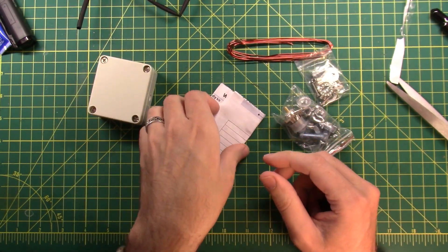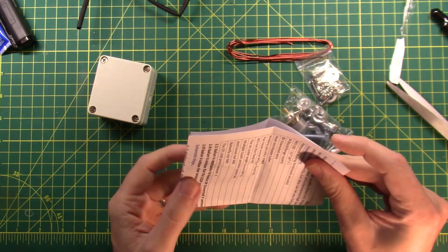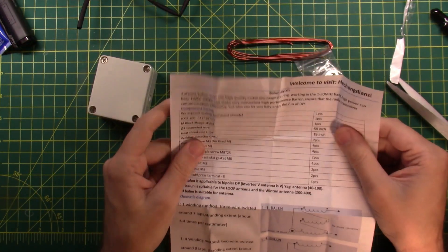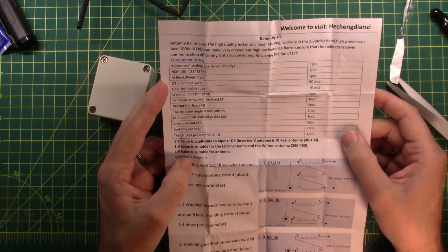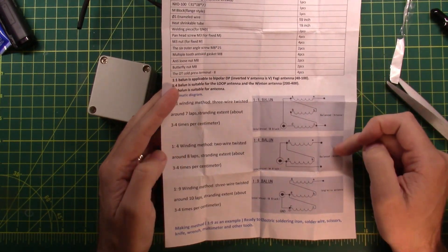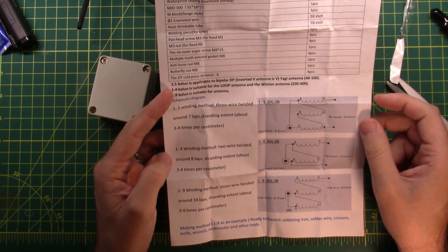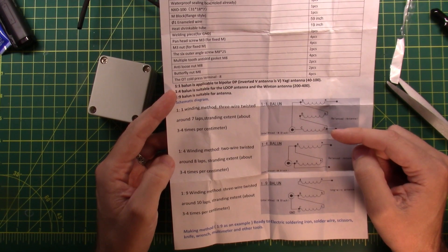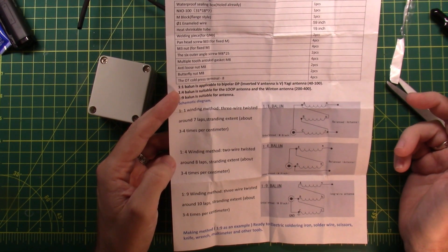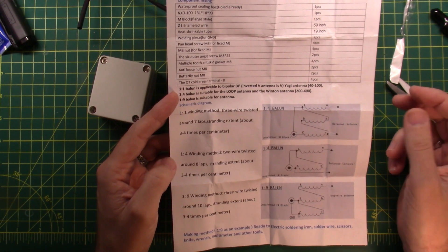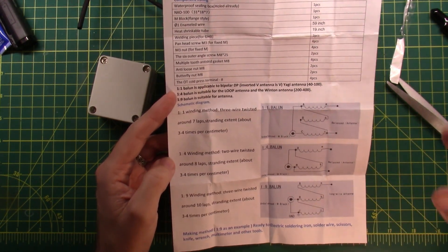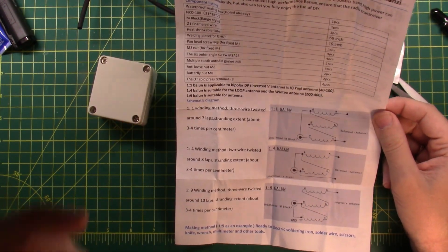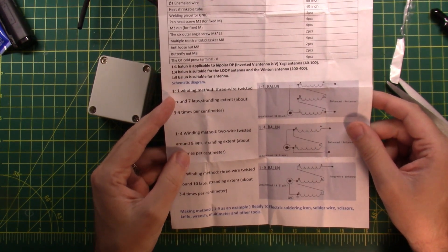So there are some wiring instructions here and some bill of materials type stuff. One-to-one balun, one-to-four balun, one-to-nine balun. Winding method: three wire twisted around seven laps, stranded extent about three to four times per centimeter. I know what they're trying to say - you take three wires, twist them together, and then you make seven turns through the center of the core. Then spacing, you just space them out nice and neat, not a big deal on a one-to-one balun.